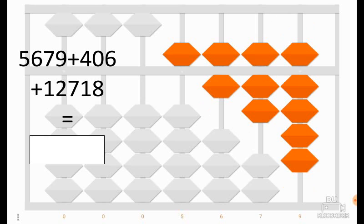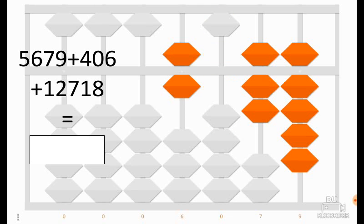To add 400, we cannot because only 300 remains in the hundreds column. So 400 is equal to 1000 minus 600. We add 1000 and we remove 600. And we have added 400. After that, we would like to add 6.